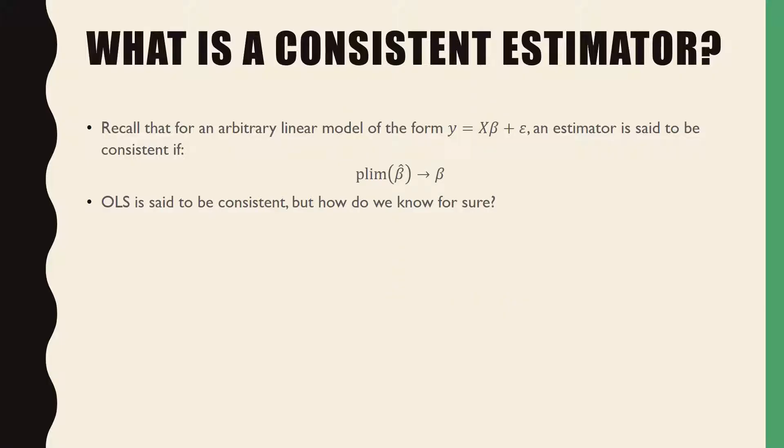So what is a consistent estimator? Recall that for an arbitrary linear model of the form y = Xβ + ε, an estimator is said to be consistent if the probability limit of it converges to its true value β, as in beta without a hat, meaning that it's not an estimator. OLS is said to be consistent, but how do we know for sure?